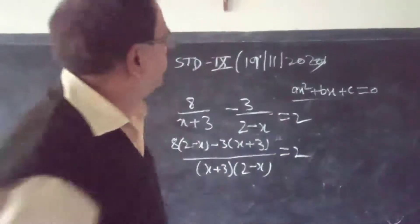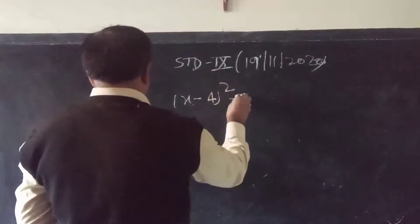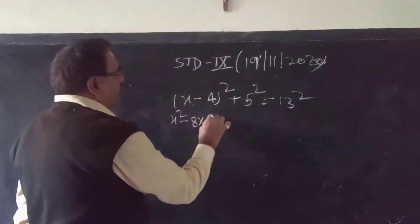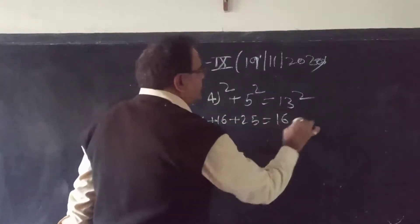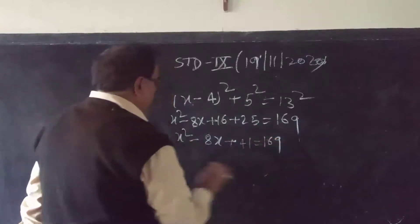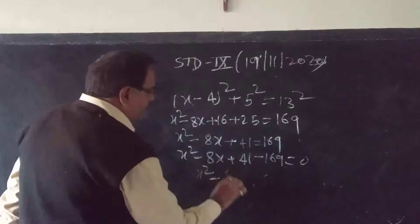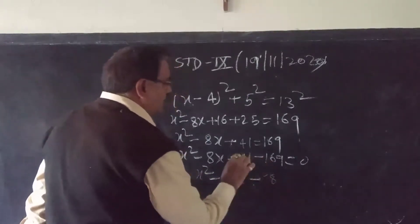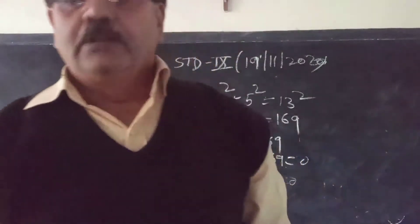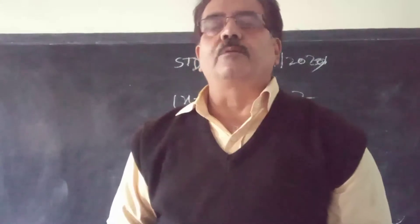Let me show one more procedure. The question is (x−4)² + 5² = 30. This uses the (a−b)² formula. Expanding: x² − 8x + 16 + 25 = 30, so x² − 8x + 41 = 30, which gives x² − 8x + 11 = 0. Now take the discriminant and get the value of x. I hope you can easily complete this chapter — there is nothing difficult. If there is any problem, I will solve the other questions also. Thank you very much.